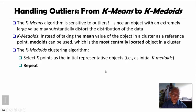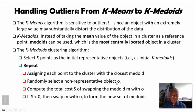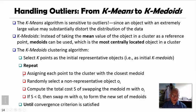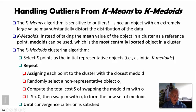We then enter a repeat loop. We assign each point to the cluster with the closest medoid. Then we randomly select a non-representative object, say O_i, and evaluate whether replacing one medoid M with O_i will improve the quality of the clustering — that is, whether the total cost of swapping is negative. If swapping reduces the sum of squared errors, we swap M with object O_i to form the new set of medoids, and redo the assignment until the convergence criterion is satisfied.